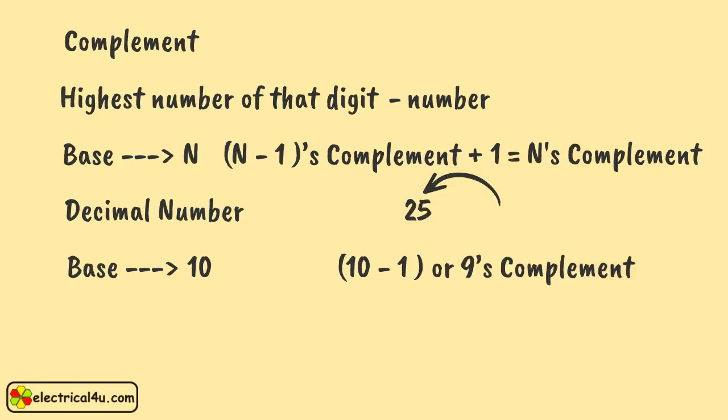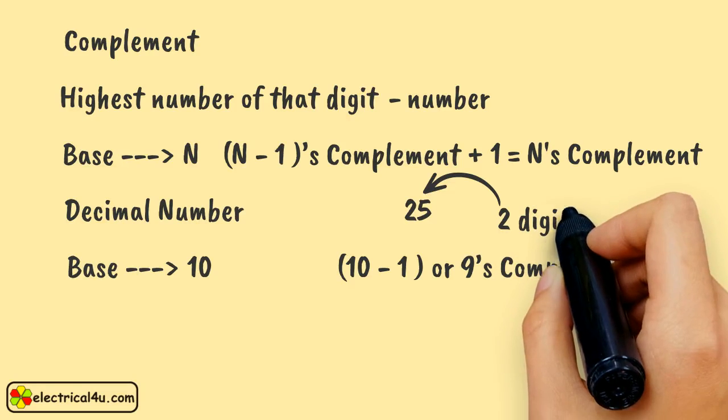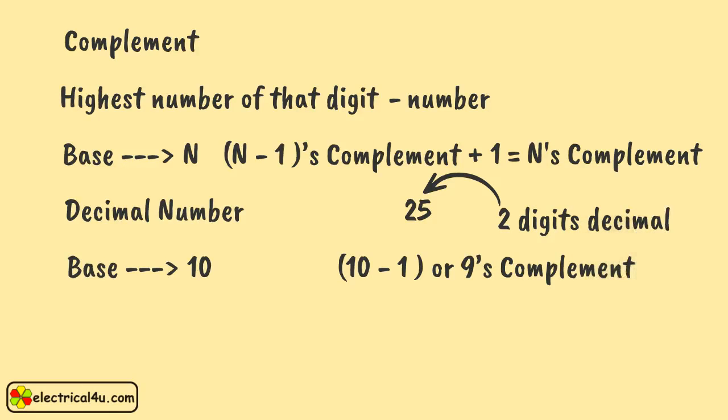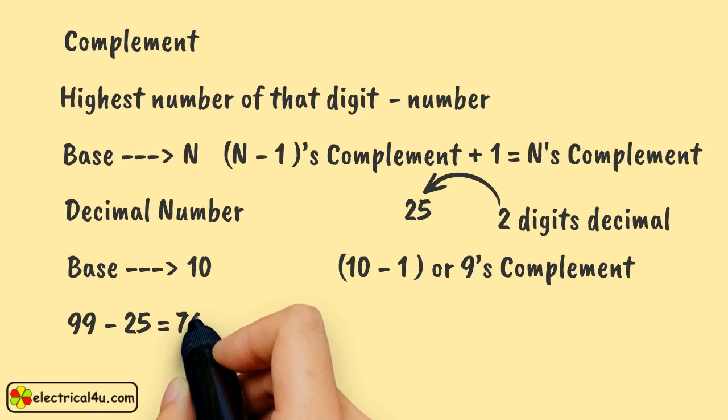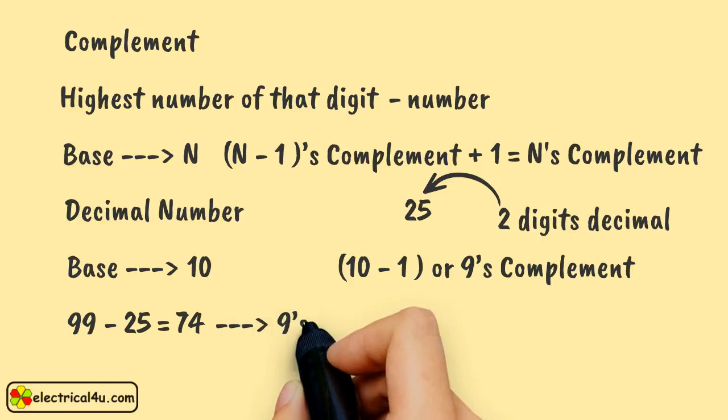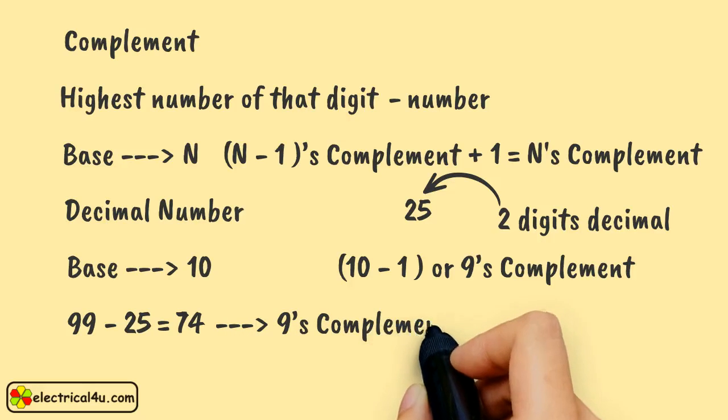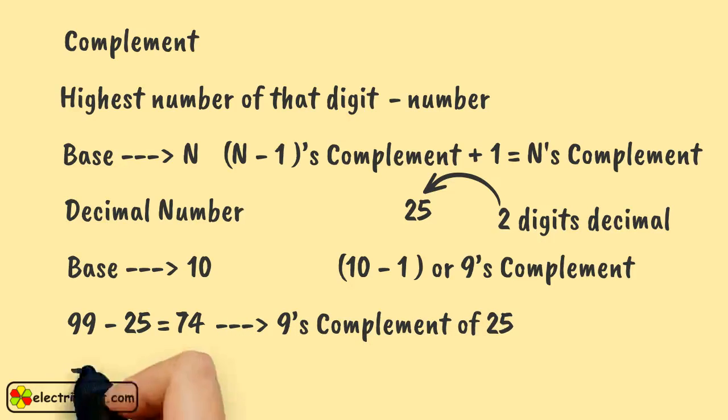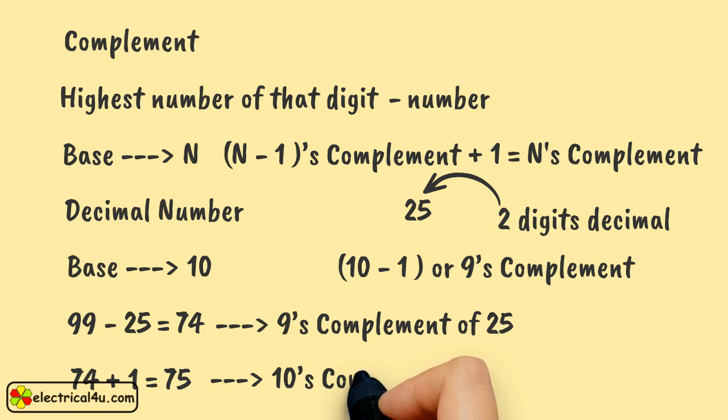The number here is 25. It is a two digits decimal number. 99 is the highest two digit decimal number. Hence, the number has to be subtracted from 99. So we get 99 minus 25, that is 74, and this is 9's complement of 25. Now if we add 1 with 74, we will get 75, which is 10's complement of 25.